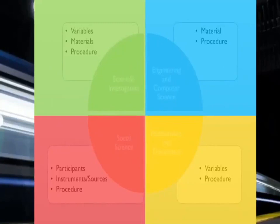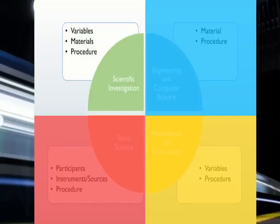For scientific investigation type projects, you need to identify the variables — see video 3. List the materials and apparatus you used for your project, and in the procedure section provide a detailed description of how the materials were used to conduct your experiments or tests. Remember, don't mention brand names.